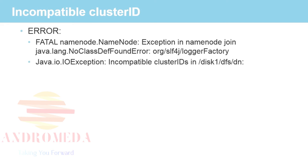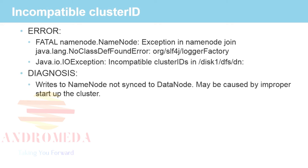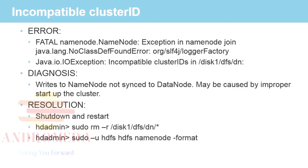Incompatible cluster ID. My personal hope is that you never run into this error, because this can be an ugly problem. You'll get an error message that says incompatible cluster ID in disk1/dfs/dn. The diagnosis is that you are out of sync on your cluster IDs between the name node and the data node — it can be caused by improper cluster startup. Your first step is to attempt shutdown and restarts, hoping it clears itself, or that you at least get the name node to come up in safe mode. However, if you cannot get the system to come back up, you're going to be faced with a very hard decision of removing all the data files on your data nodes and reformatting the cluster. Again, you have my hope that you never run into this particular problem.